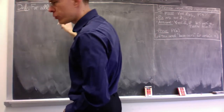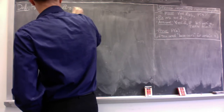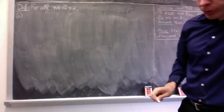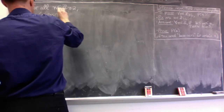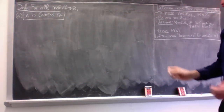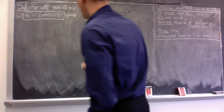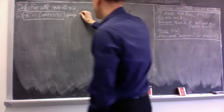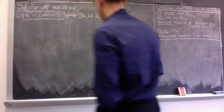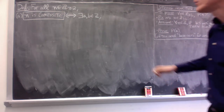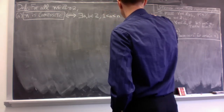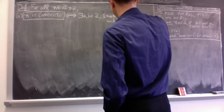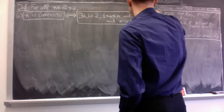The easiest approach is to first define composite numbers, for integers at least 2. If n is greater than or equal to 2, we say n is composite if intuitively there's a way to factor it other than 1 times n. In symbols: there exist integers A and B, strictly between 1 and n (so 1 < A < n and 1 < B < n), such that n equals A times B. Note A is allowed to equal B.